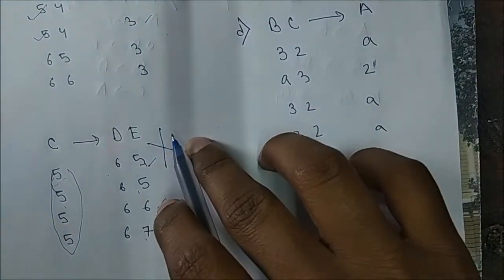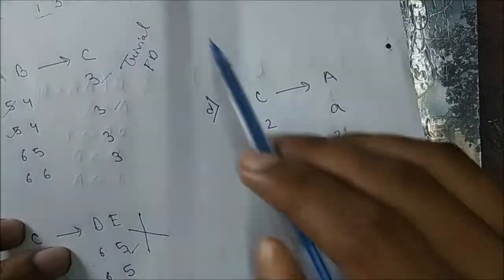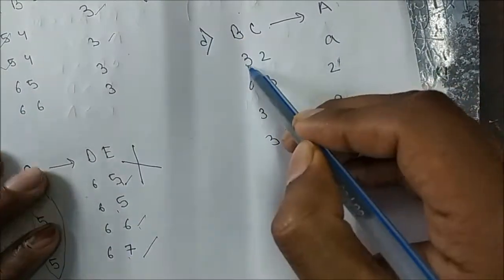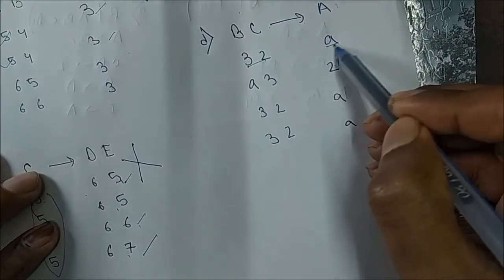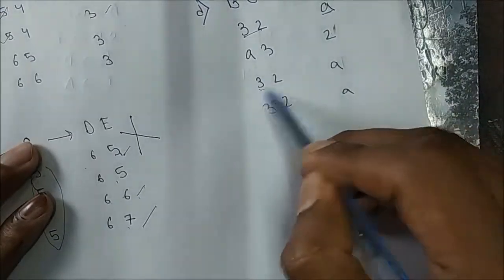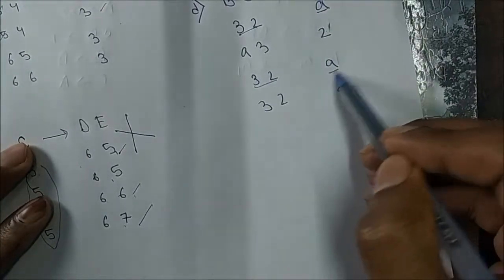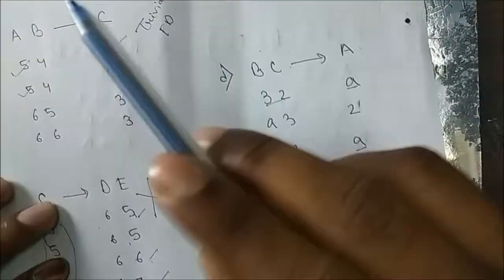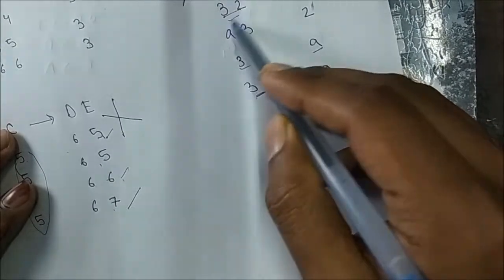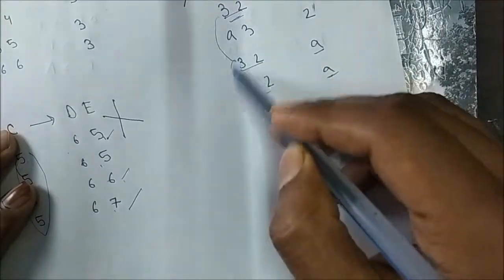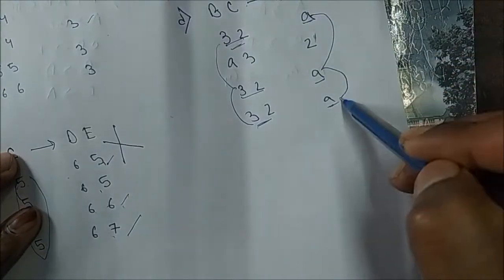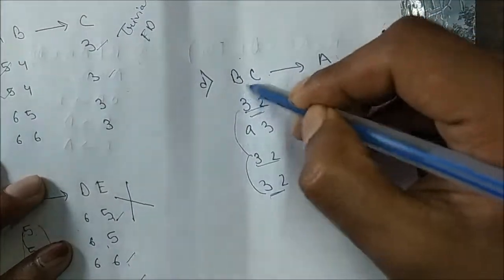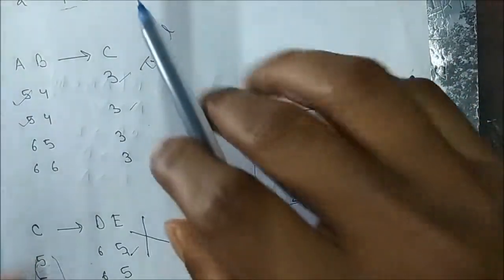The last one: BC → A. There are values 3, 2 containing value A; again 3, 2 containing value A; and again 3, 2 containing value A only. This means it is also a trivial functional dependency — so this is also a functional dependency.